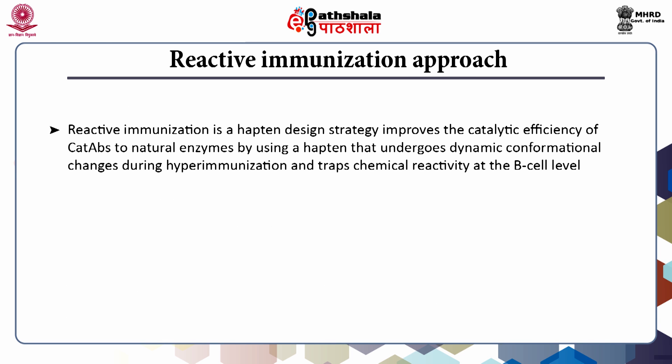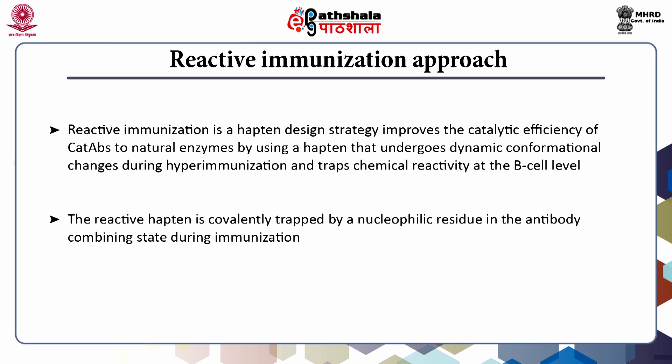The reactive immunization hapten design strategy improves the catalytic efficiency of catabs relative to natural enzymes by using a hapten that undergoes dynamic conformational changes during hyperimmunization and traps chemical reactivity at the B-cell level. The reactive hapten is covalently trapped by a nucleophilic residue in the antibody combining site during immunization, and the trapped monoester functions as a transition state analog.